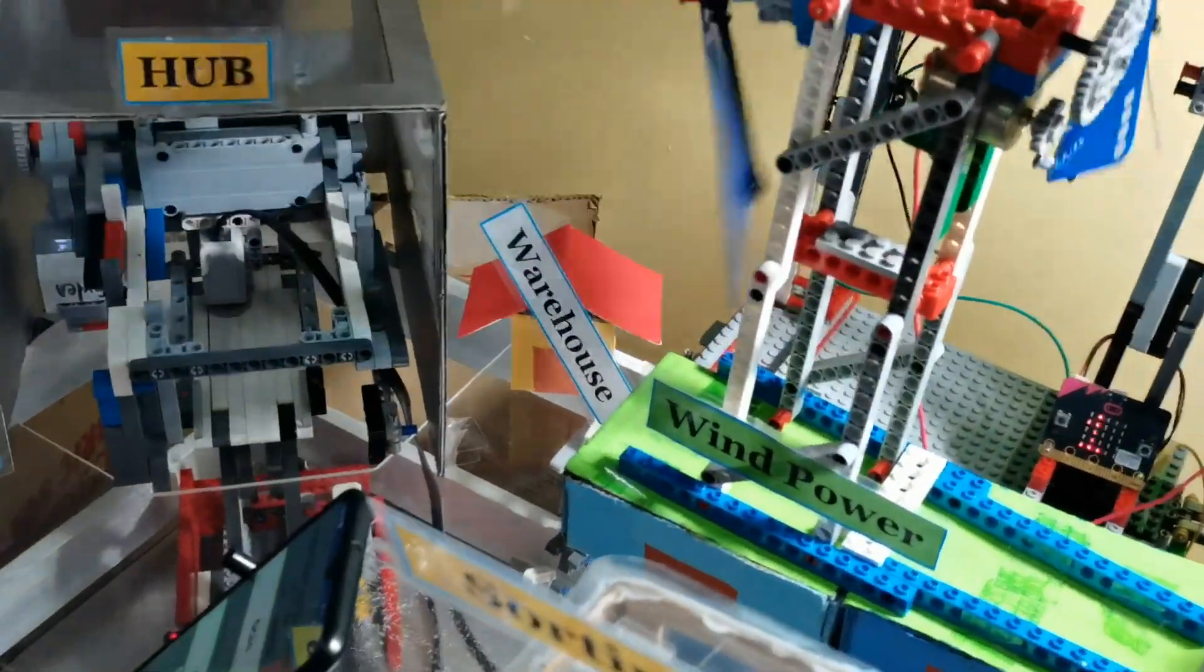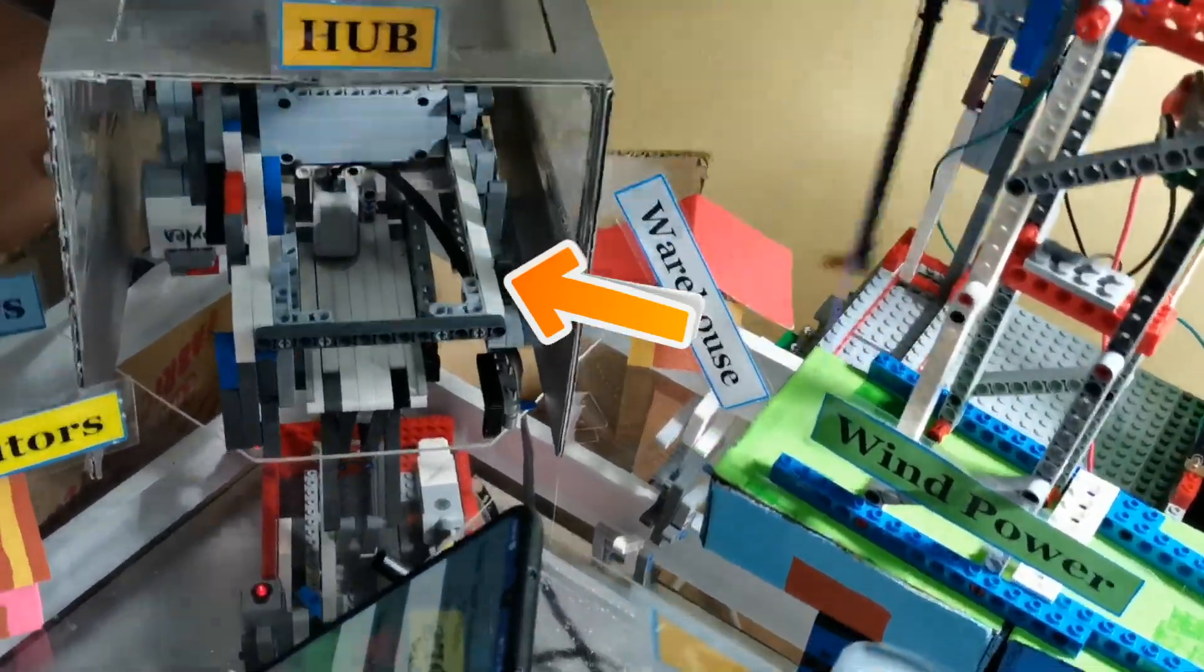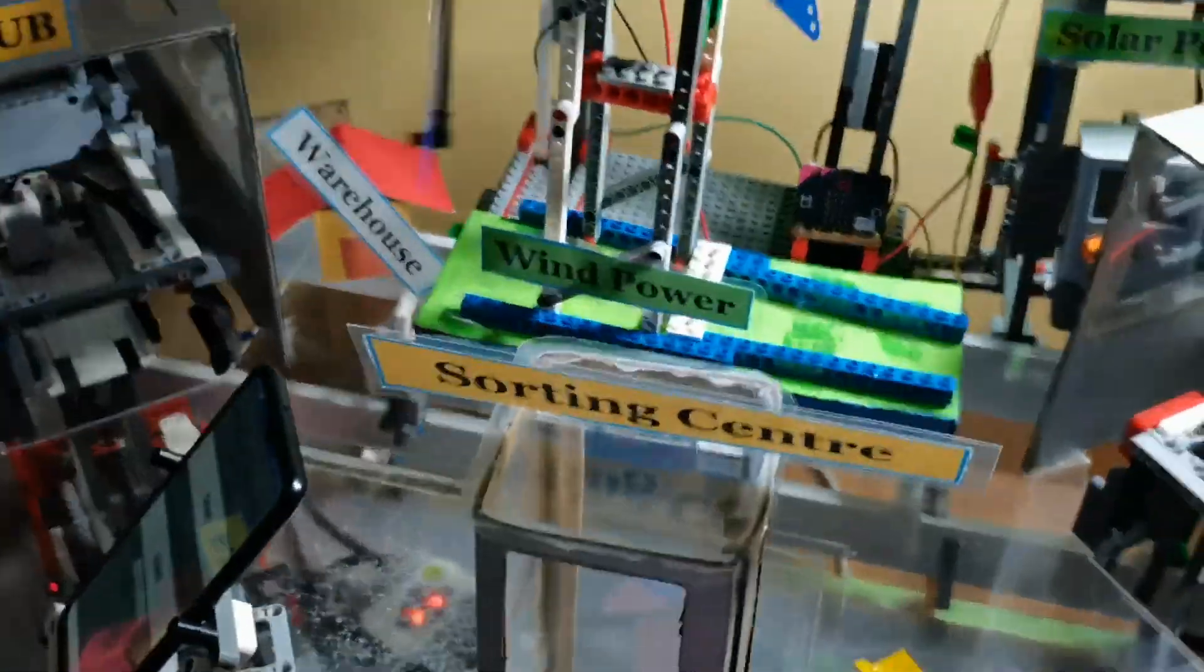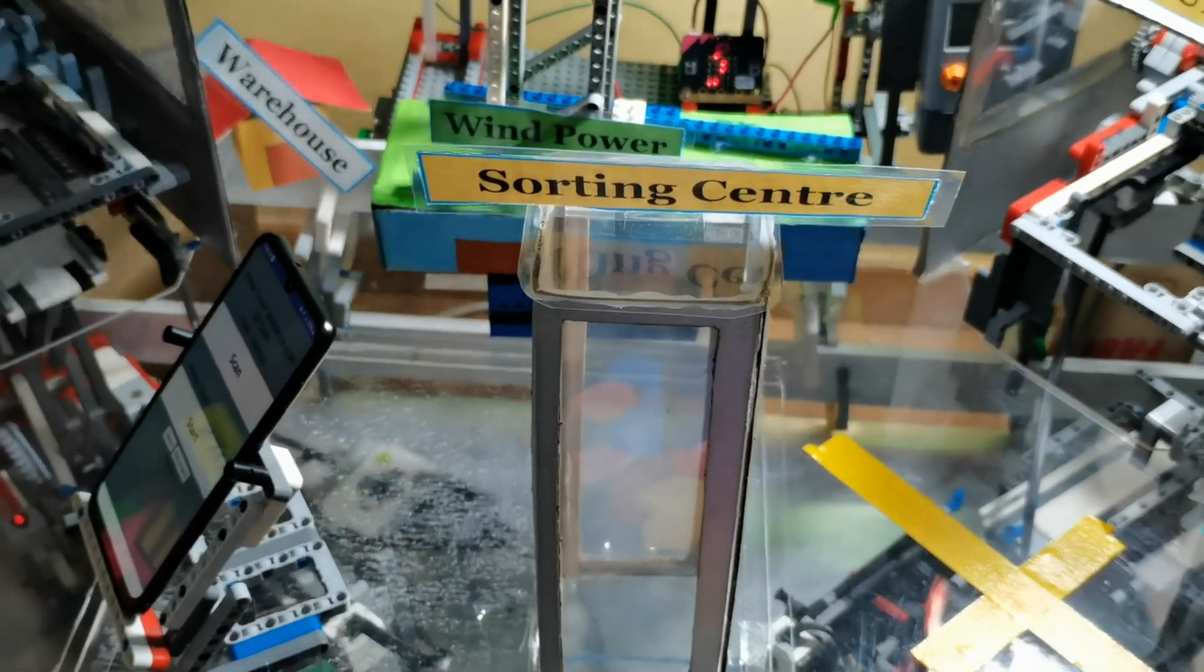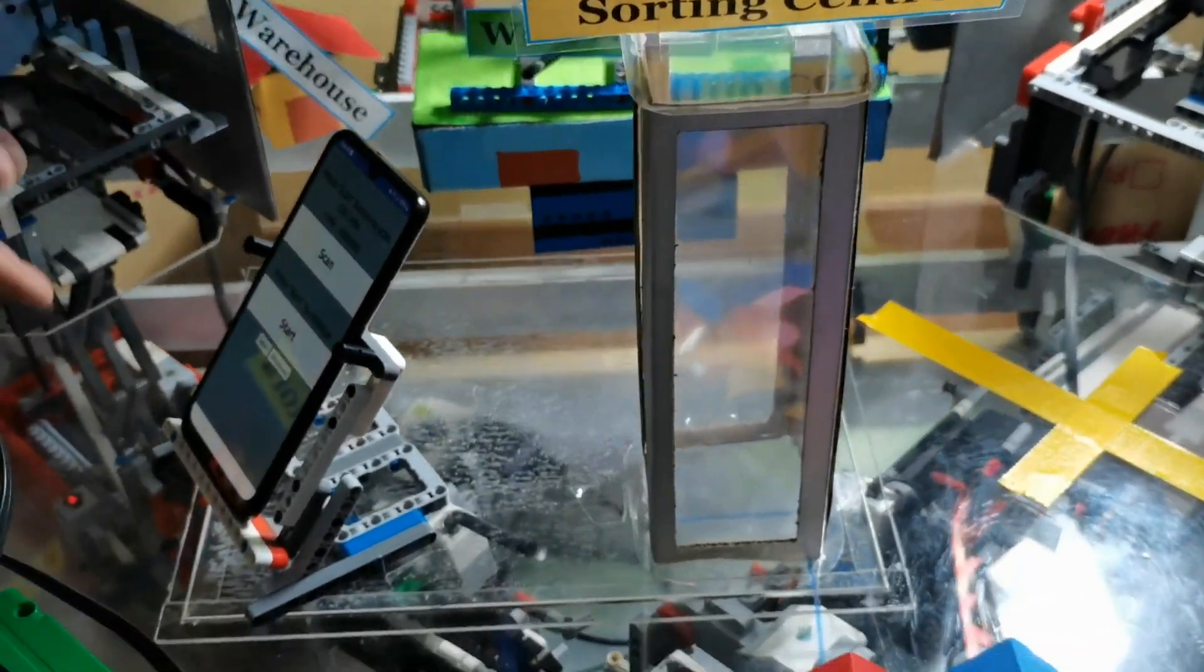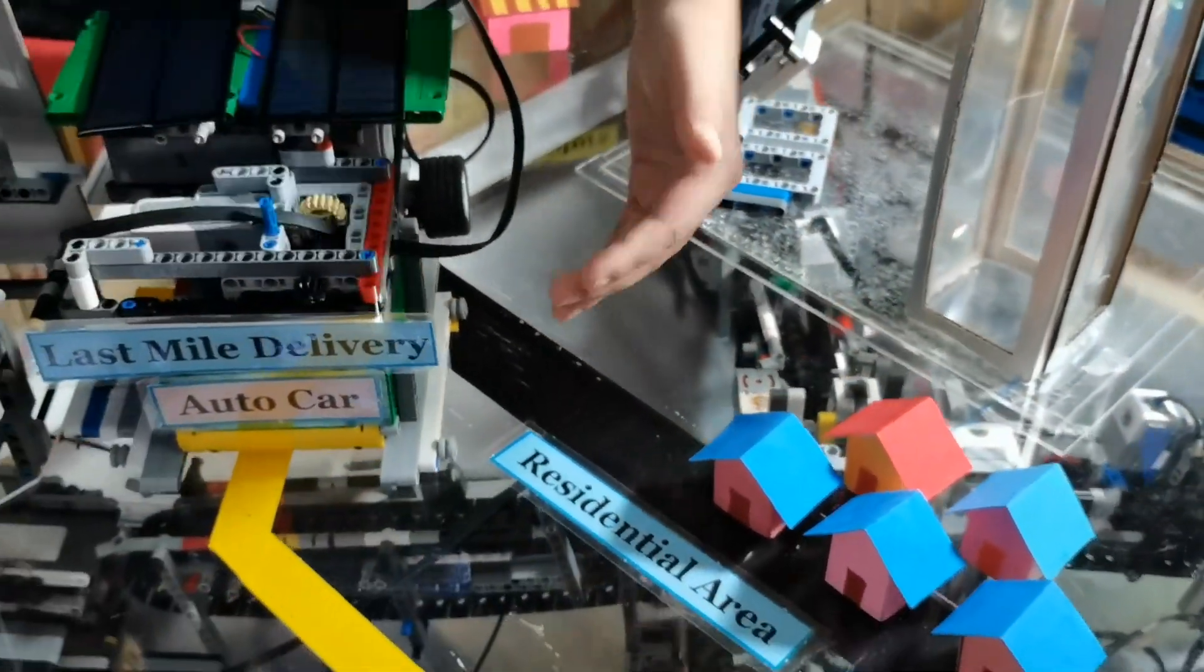Second sector is the supplier sector, which is manufacturers and factories. Then the third sector is the sorting sector, where all the parcels will be sorted and sent out to different receiving hubs. The last sector is the last mile delivery.